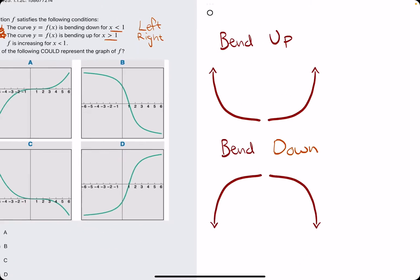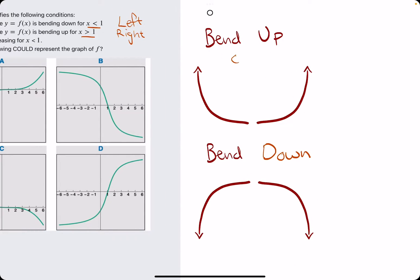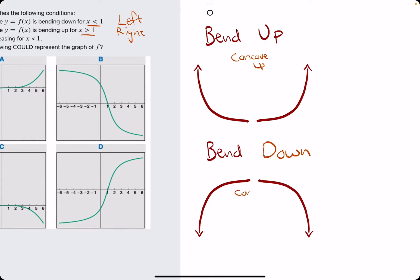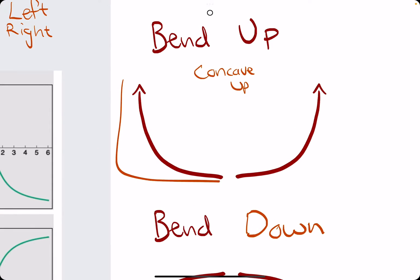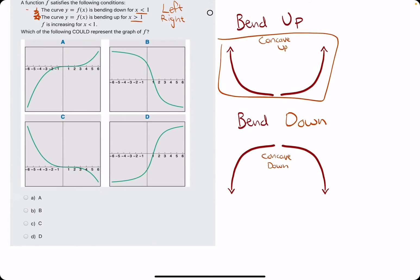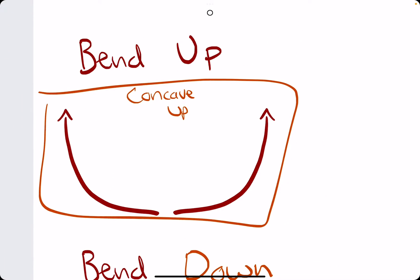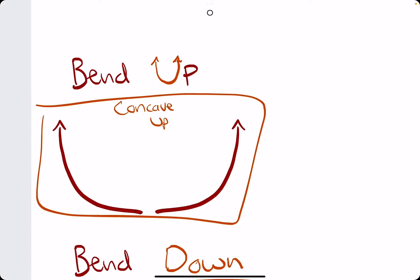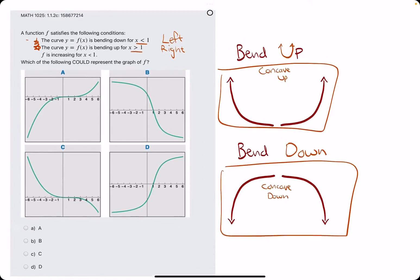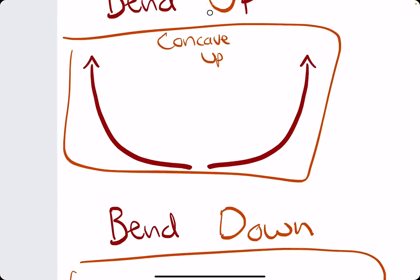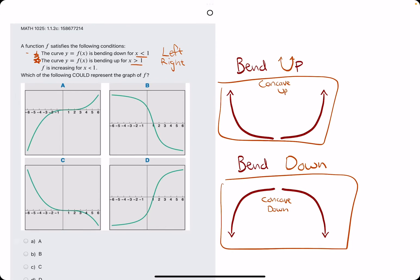Bending up and bending down is basically another way to describe concave up and concave down. Any curve of this behavior is concave up, and any curve of this behavior is concave down. Concave up looks like the shape of the letter U — it's just opening up. So let's keep going.